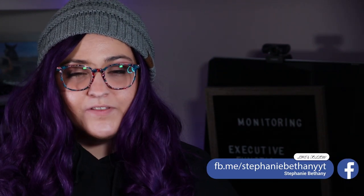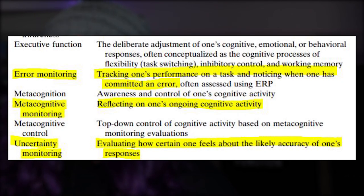I came across a paper on the self portion of self-control, and in it they had a table of definitions that included three different terms involving the word monitoring, from which we can derive a meaningful definition. Error monitoring: tracking one's performance on a task and noticing when one has committed an error. Metacognitive monitoring: reflecting on one's ongoing cognitive activity. And uncertainty monitoring: evaluating how certain one feels about the likely accuracy of one's responses. These three definitions contain three keywords: tracking, reflecting, and evaluating.